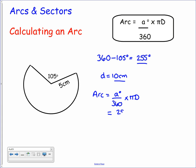We have 255 degrees over 360 degrees multiplied by pi multiplied by a diameter of 10. This comes out to give you 22.252 and so on. So rounding that to two significant figures, that will go to 22 centimeters. Remember it's a length, so make sure you have units on this.